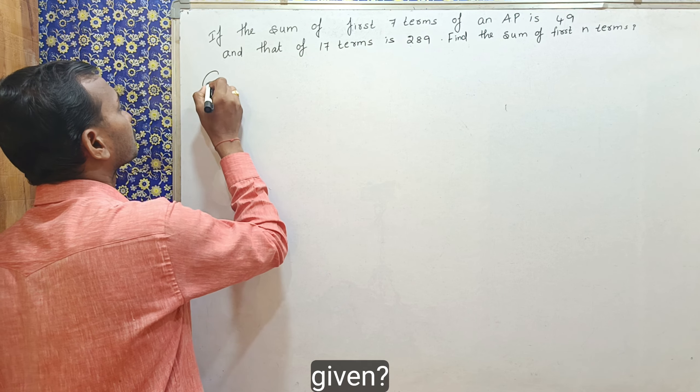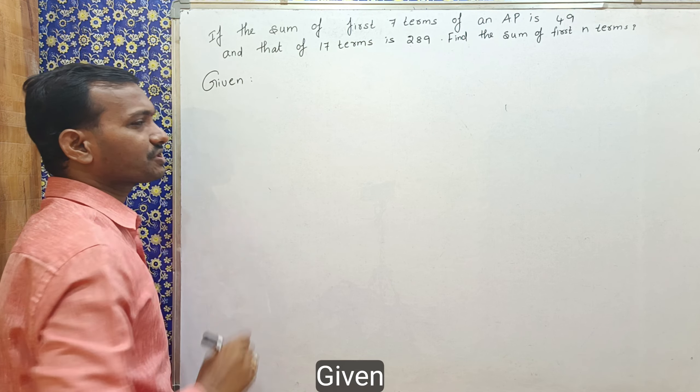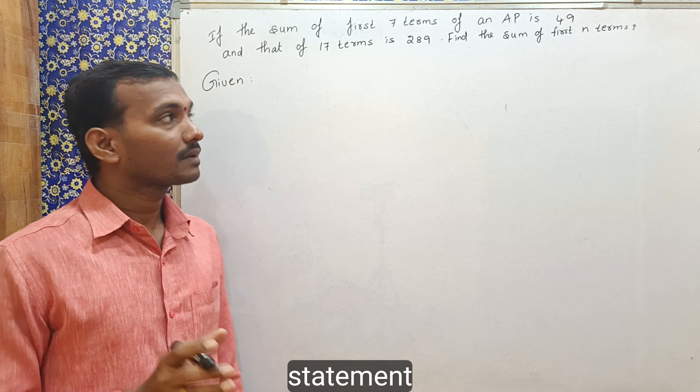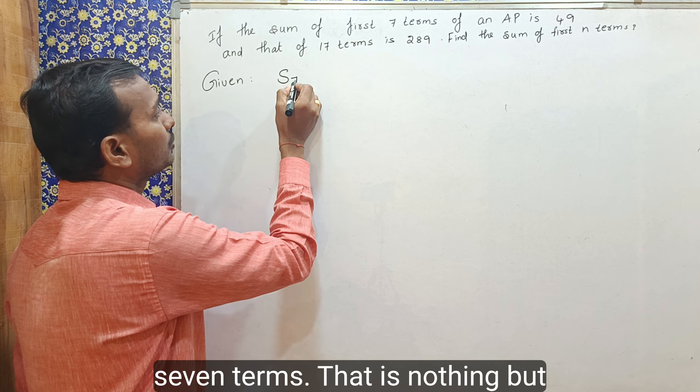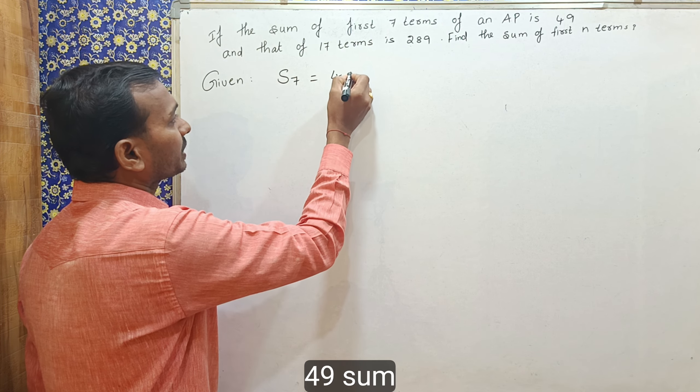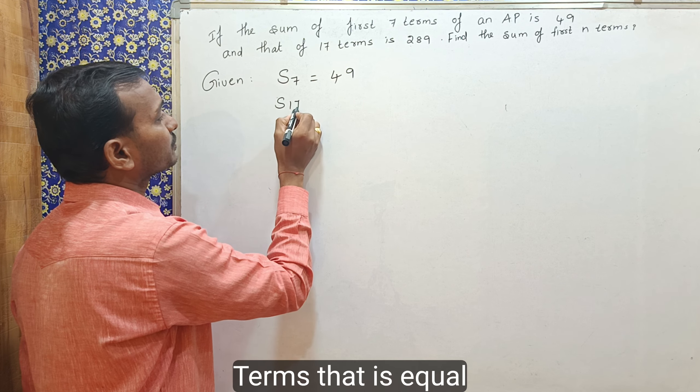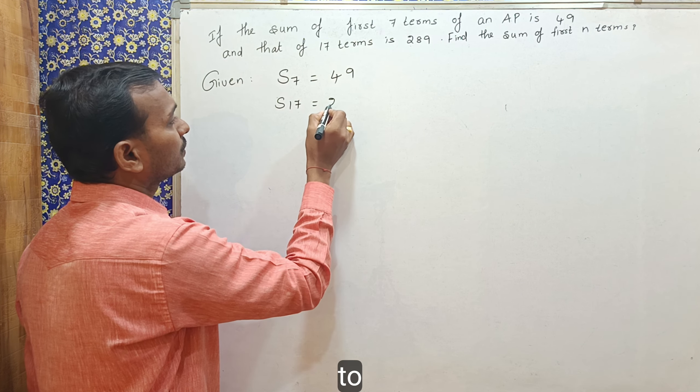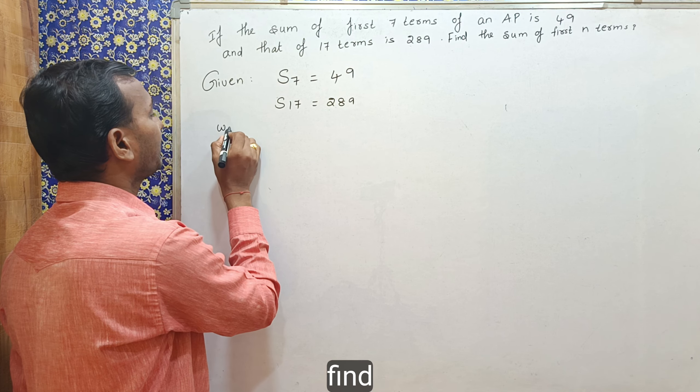First given, given statement yukka sammho chesi 289. S7 is given, sum of 7 terms. That is nothing but S7 is equal to 49. Sum of 17 terms, that is equal to 289. He was asking that, we have to find.